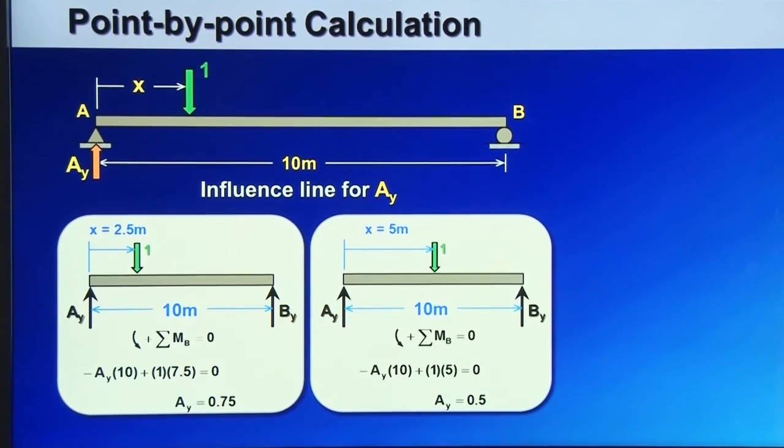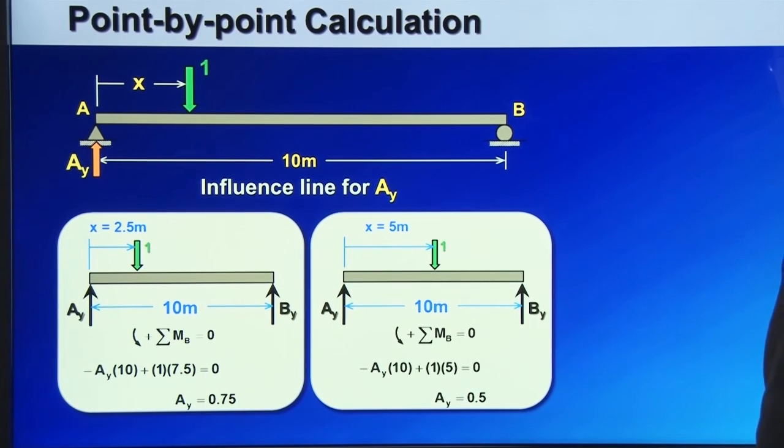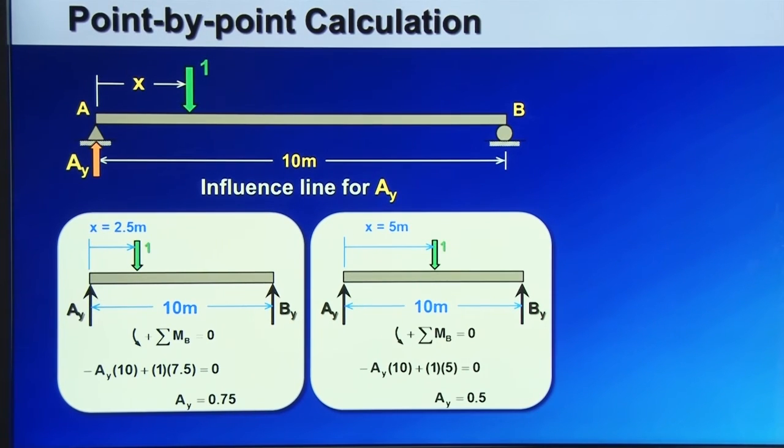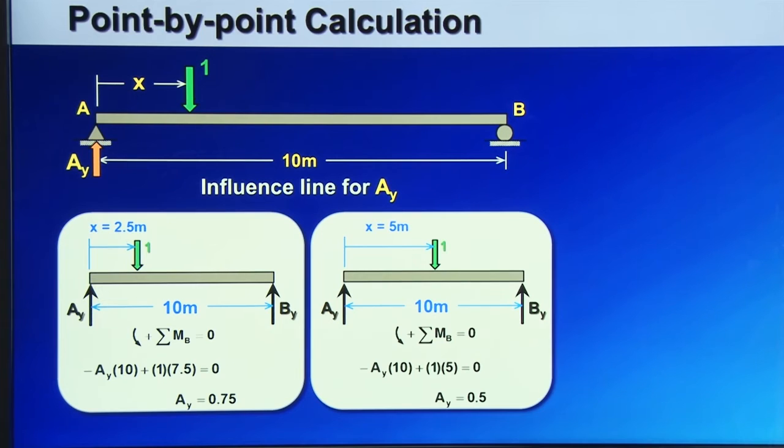Then I move the downward unit force to another location, which is 5 meters, measuring from the left, and then perform another equilibrium calculation, and the result shows you that Ay is equal to 0.5.